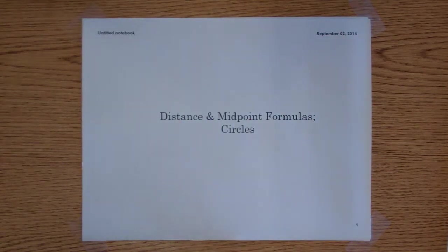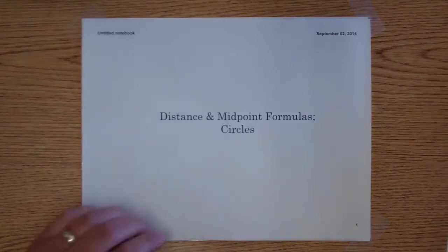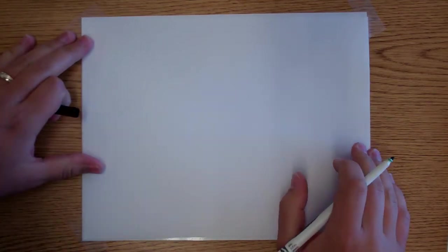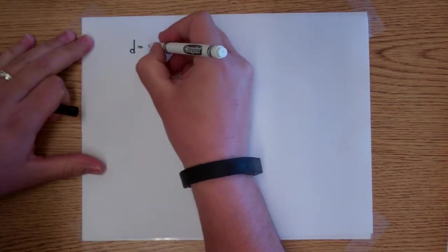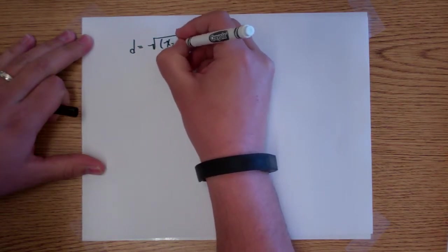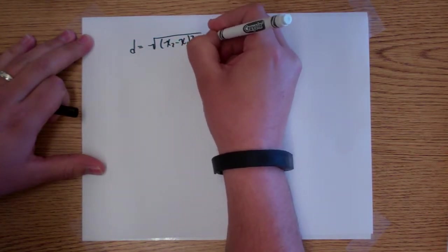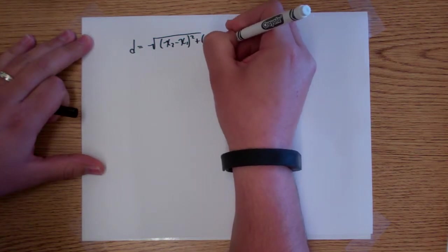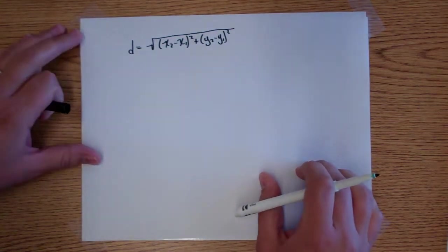In this video we're going to go over distance and midpoint formulas, and then we're going to finish up with discussing circles. The distance formula is: distance equals the square root of (x2 minus x1) quantity squared plus (y2 minus y1) quantity squared, all under the square root.